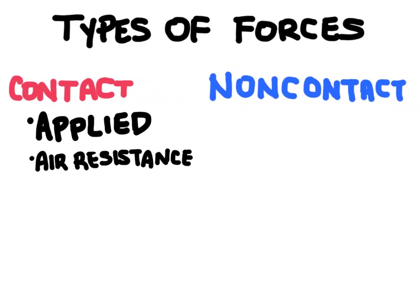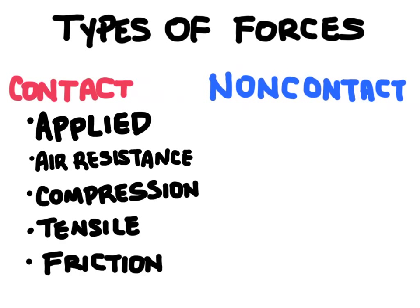Another example is compression, which would be squeezing an object to change its shape. A couple other examples are tensile force and friction. Tensile is actually tearing something apart and then friction would be anything that's going to oppose motion essentially.